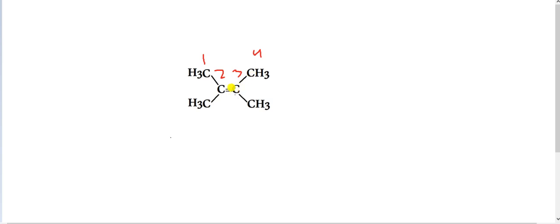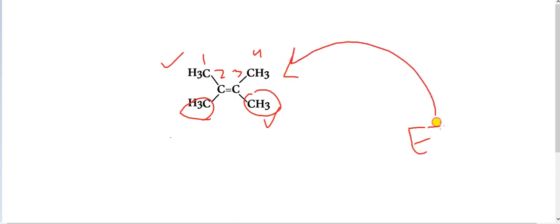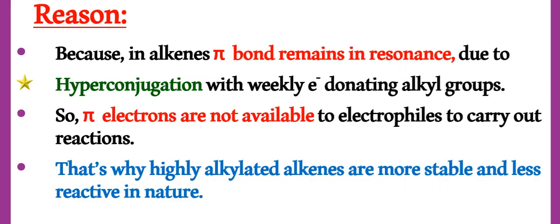The double bond is not localized in one place — it is delocalized. Sometimes it shifts to carbon three and four, sometimes to other positions through the substituents. This delocalization means any electrophile cannot attack effectively because the double bond is not fixed at one position. Therefore, the reaction chances are reduced and the molecule is stable and less reactive. Now let's see the term hyperconjugation in detail.